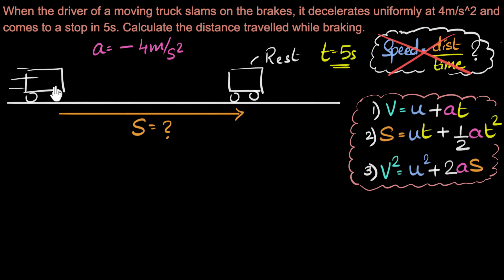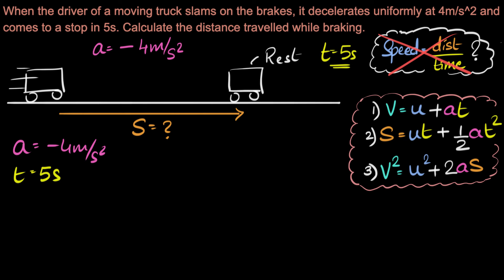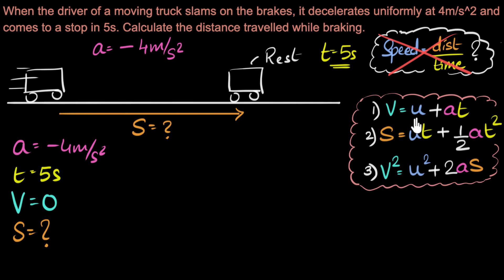Let's identify what's given. We don't know the initial velocity U — we know it's moving but not how fast. Acceleration A is minus 4 meters per second squared. Time T is 5 seconds. Since it comes to a stop, final velocity V is zero. We need to calculate displacement S. But U appears in all three equations, so without finding U first, we cannot find S. Our first step is to calculate U.